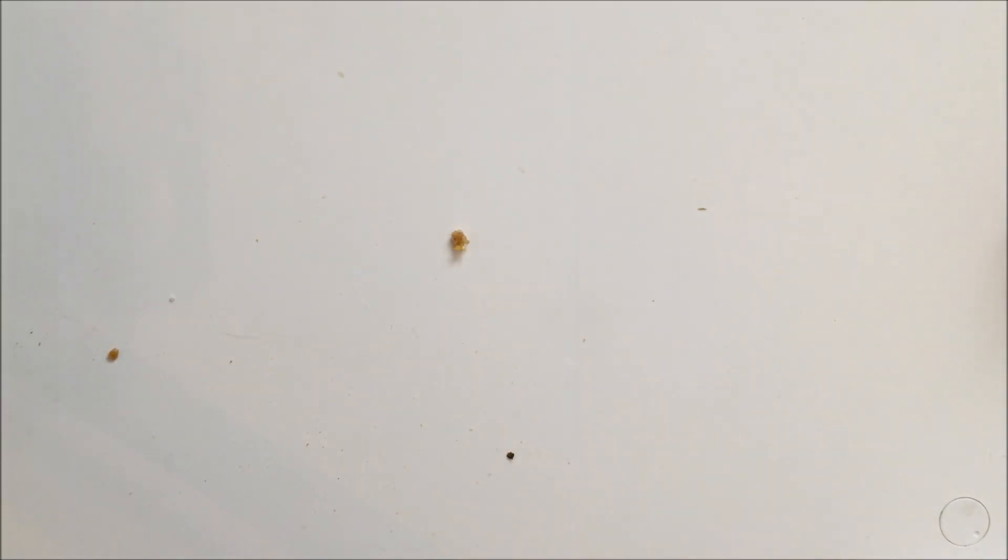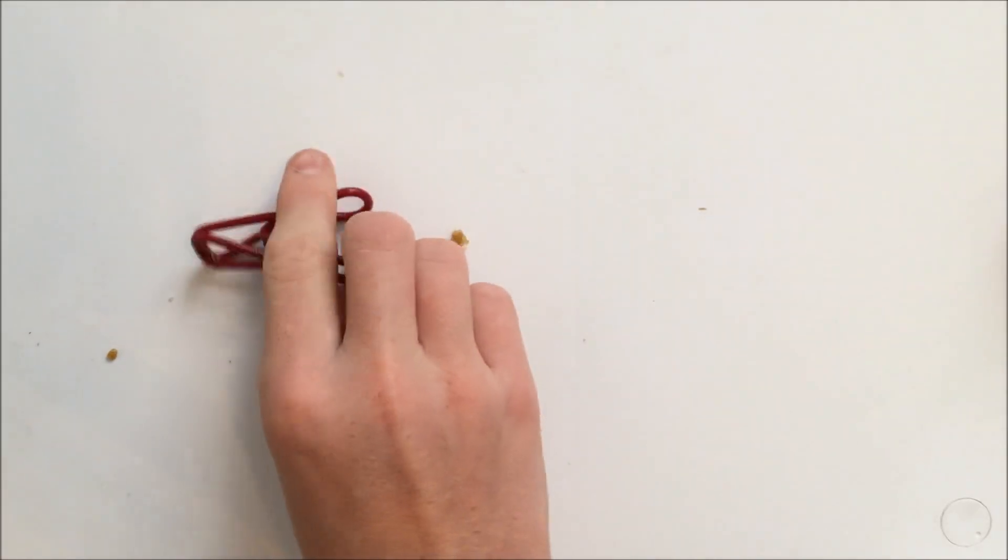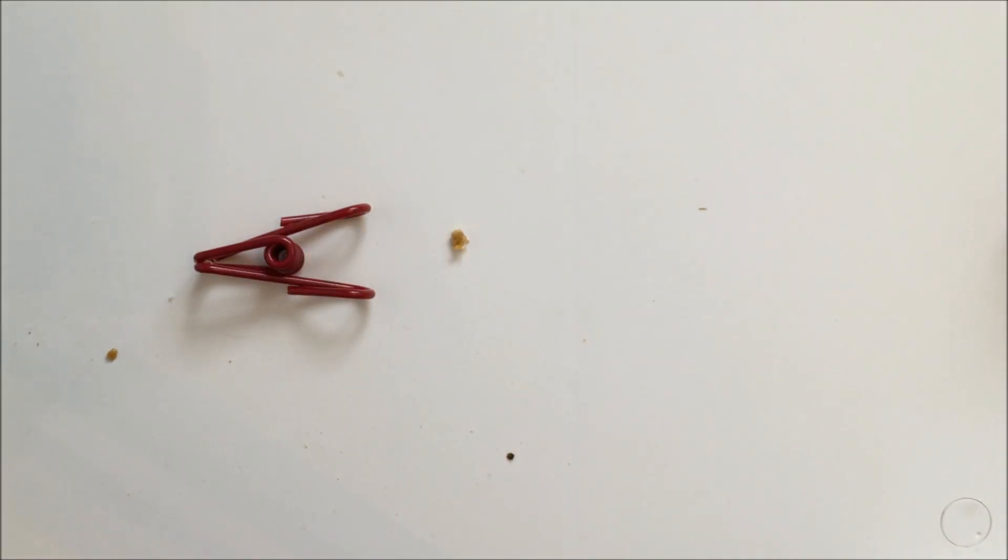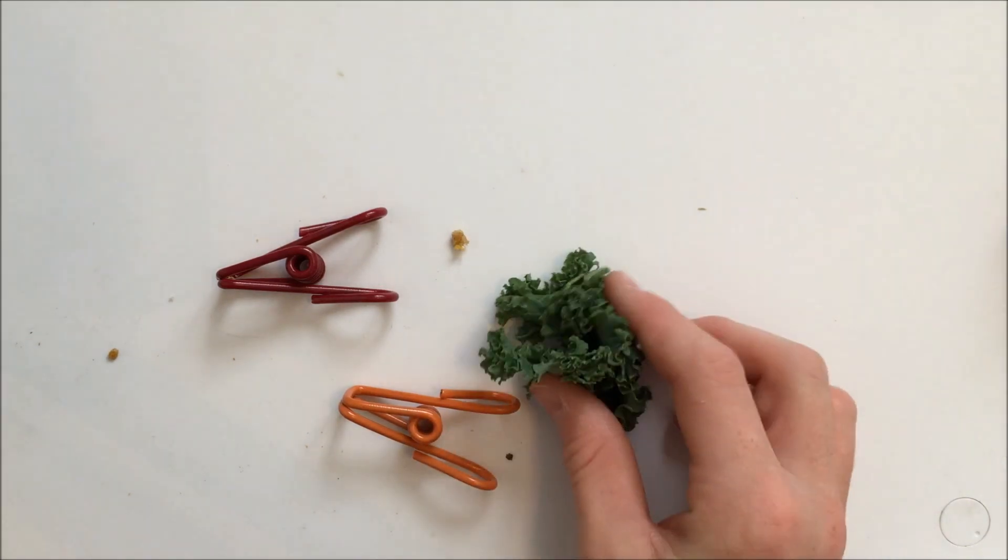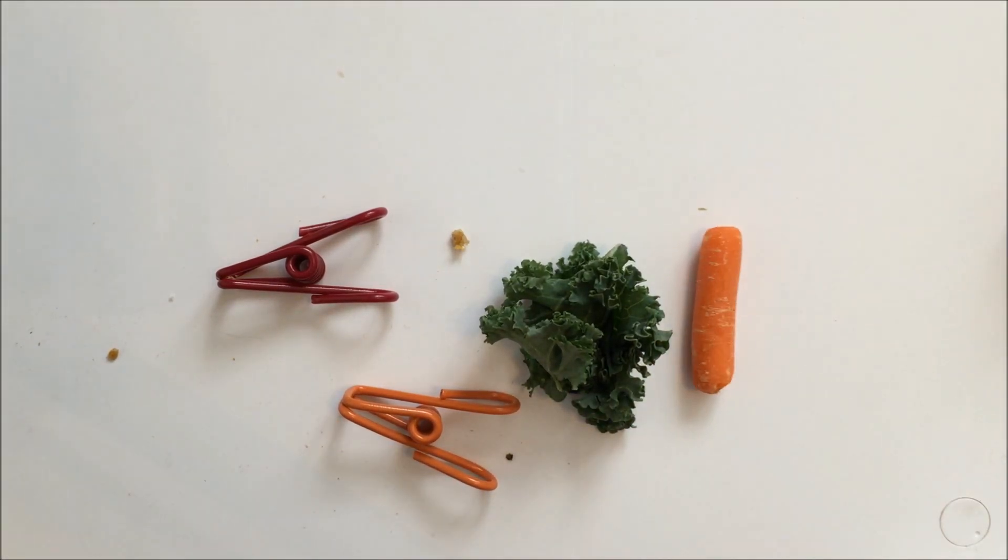So the last thing we're going to make is a vegetable string thing for your rabbit. What you're going to need is a couple of clips. I'm going to be using two today. You can use probably as many as you want, probably four is good. Then you're also going to need some vegetables when you're ready. So I'm just going to have some kale and some carrot. And then you're going to need some rabbit safe string.